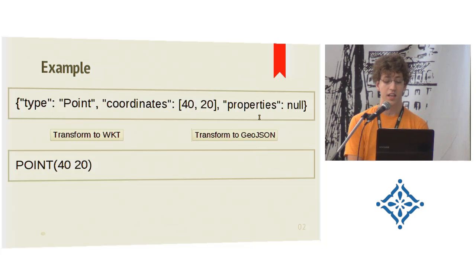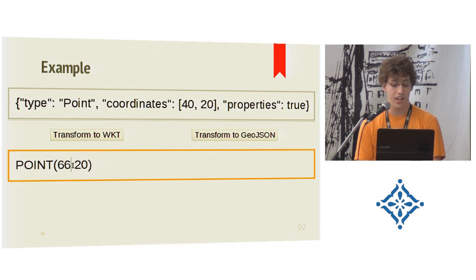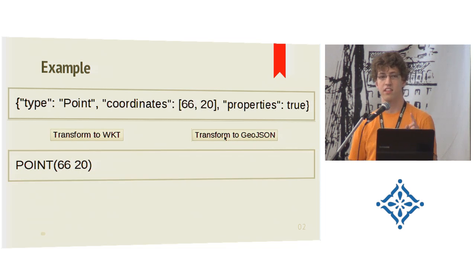What you should also see now is at the end I have this properties thing which has a value. And I can now change this value to something else, transform it to well-known text, and again update it. And the cool thing now is the properties value still stayed the same.